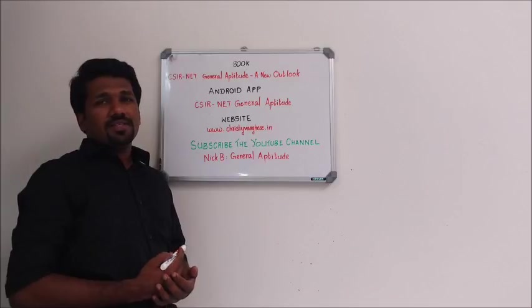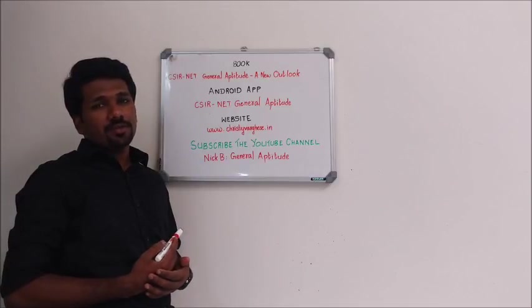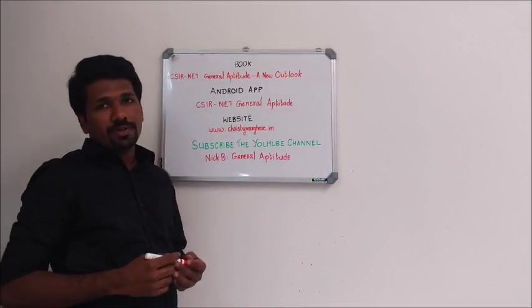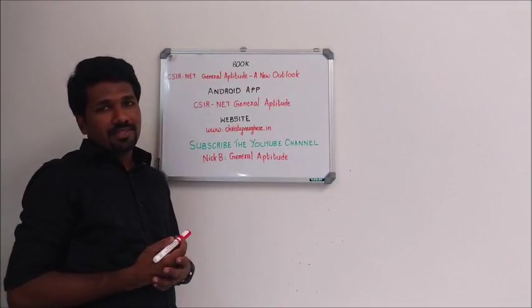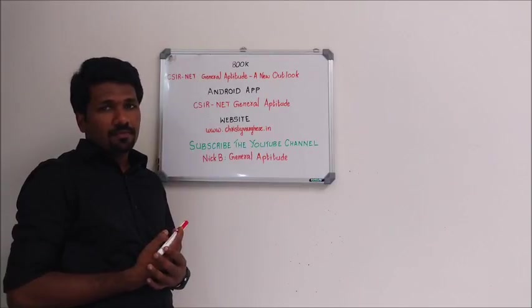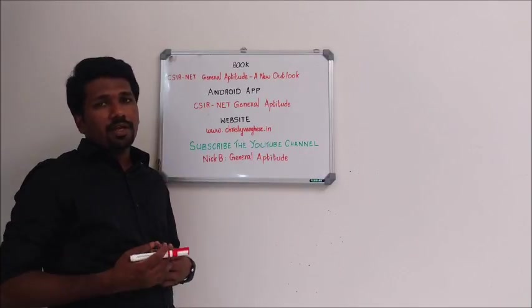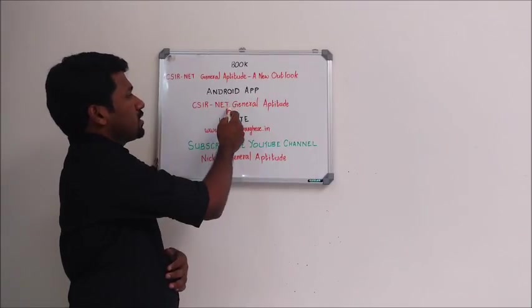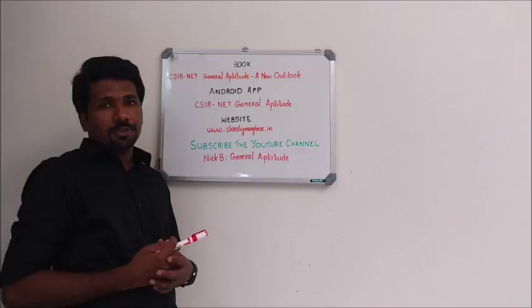This video series is primarily released as an additional resource for the readers of the book CSIR Net General Aptitude: A New Outlook. If you don't have a copy of the bestseller book, you can buy it from Amazon, Flipkart or Paytm. If you want more study materials on General Aptitude, you can download our free Android app CSIR Net General Aptitude from Playstore.